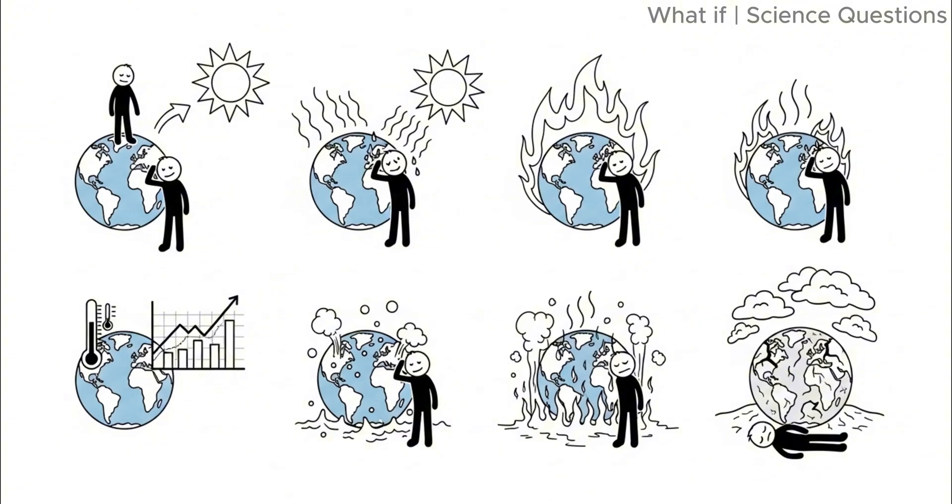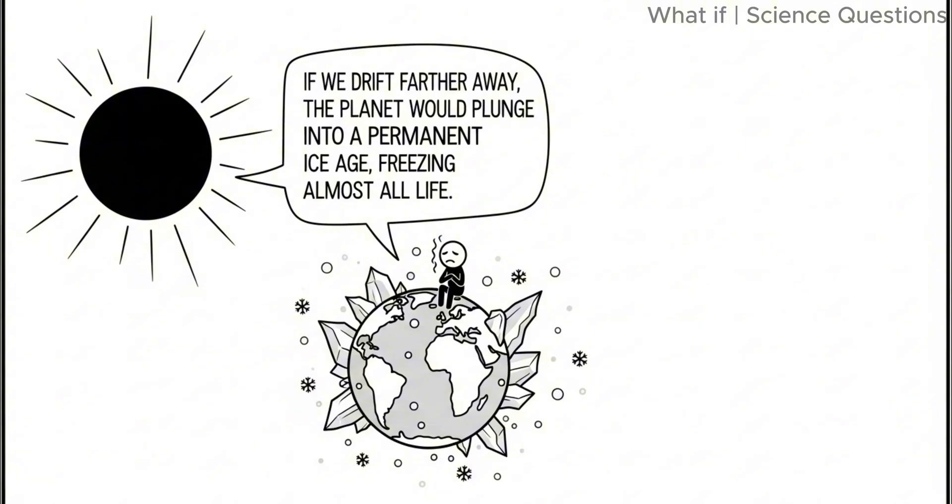If we drift closer to the sun, temperatures could skyrocket, boiling oceans and triggering runaway greenhouse effects. If we drift farther away, the planet would plunge into a permanent ice age, freezing almost all life.